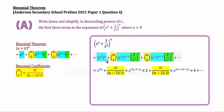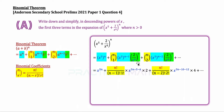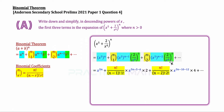For all the x terms, we combine them using indices rules. The first term gives x to the power of 5n. For the second term, x^5 to the power of (n−1) gives x^(5n−5), and dividing by x^6 subtracts 6 from the power, giving x^(5n−11). For the third term, x^5 to the power of (n−2) gives x^(5n−10), and dividing by x^12 gives x^(5n−22).